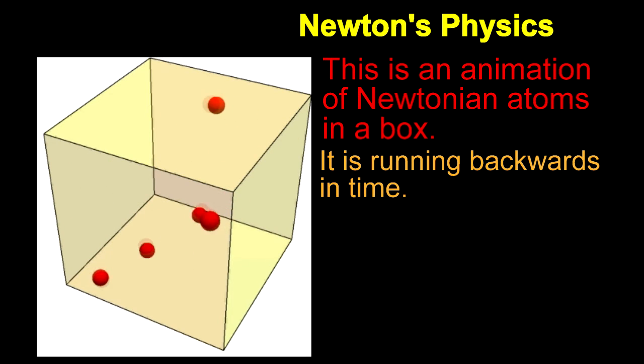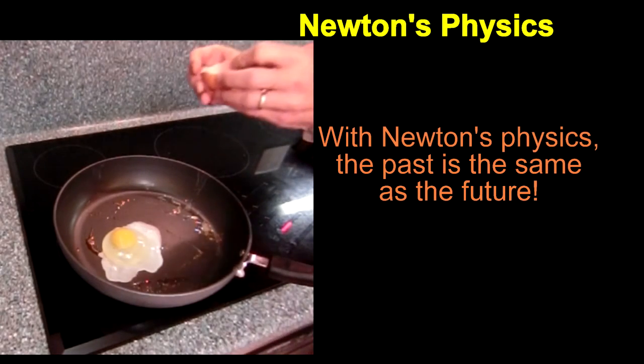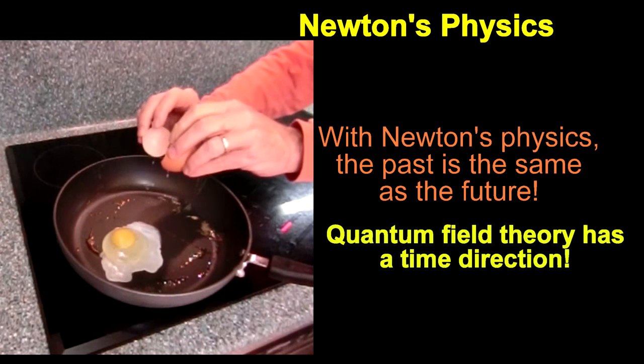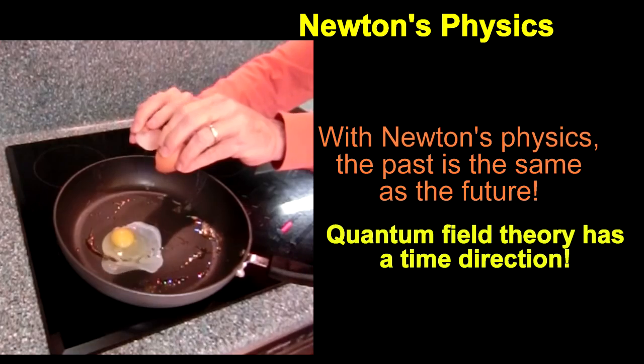Newton's physics also breaks from common sense. It doesn't have a direction of time in it. With Newton's physics, everything works the same in reverse as going forward. There's no reason for an egg not to unbreak itself. This problem is solved with quantum field theory, which does have an arrow of time.